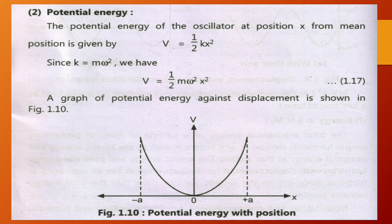The potential energy of the oscillator at position x from the mean position is given by V = ½kx², where k = Mω². Therefore, the potential energy V = ½Mω²x².